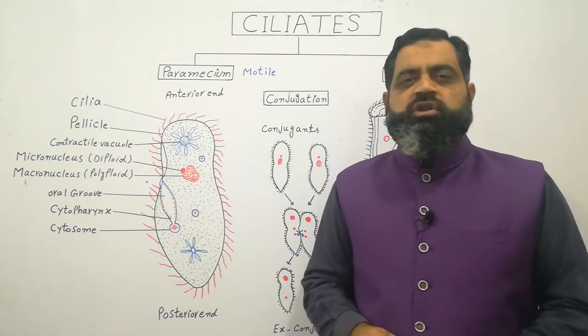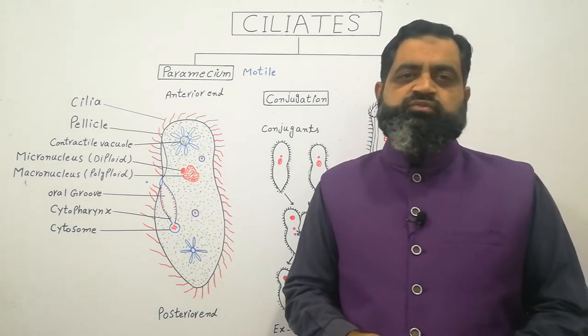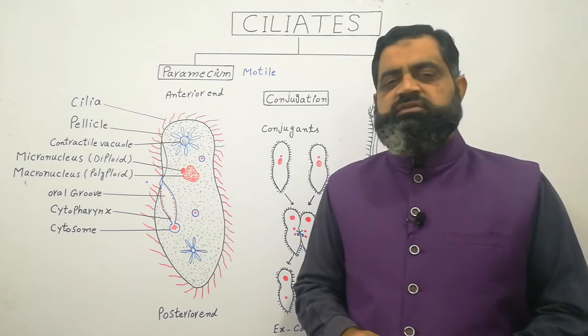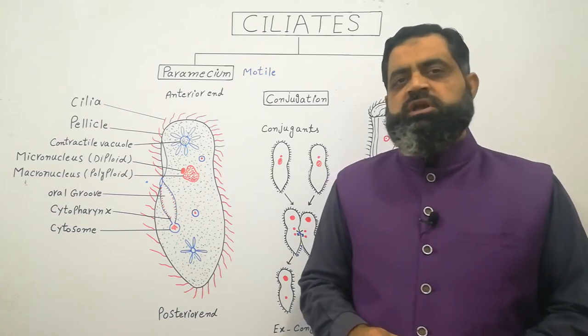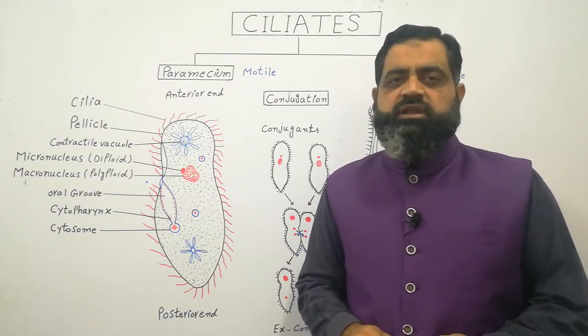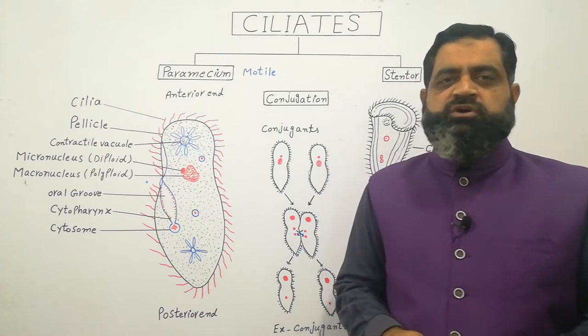Ciliates live in hypotonic environment where water tends to move inside the cell. If the water keeps entering in their body, their body will burst like a balloon. So to keep the osmotic balance, they have a vacuole known as contractile vacuole.